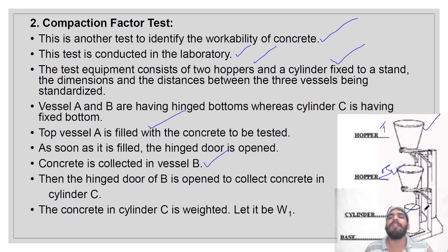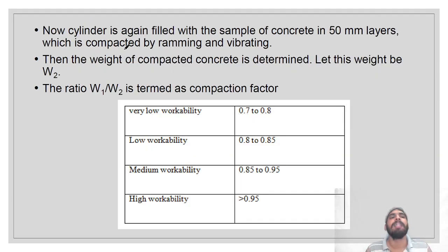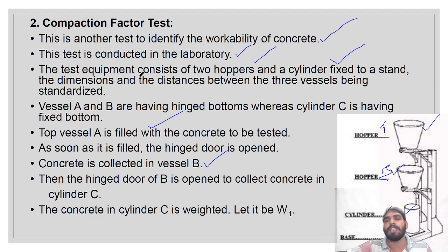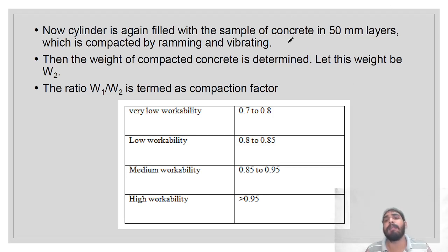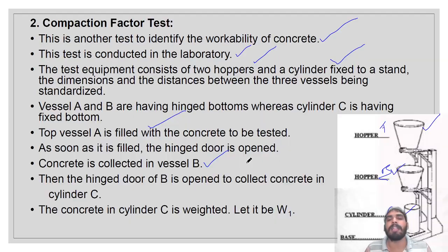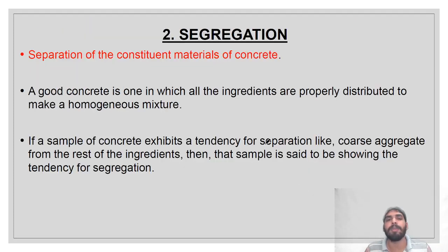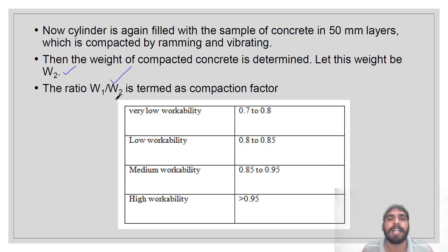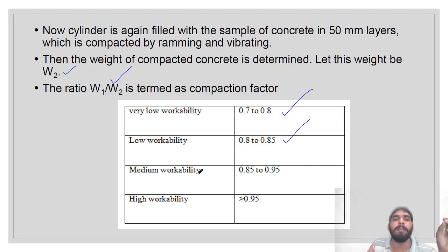Take the weight of the concrete in cylinder C — this is measured as W1 (loose weight). Then the cylinder is filled with the same concrete sample fully compacted, and that weight is W2. The compaction factor = W1/W2. Very low workability: 0.7 to 0.8; low workability: 0.8 to 0.85; medium workability: 0.85 to 0.95; high workability: greater than 0.95.